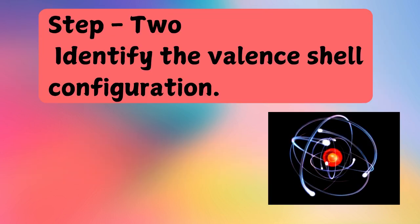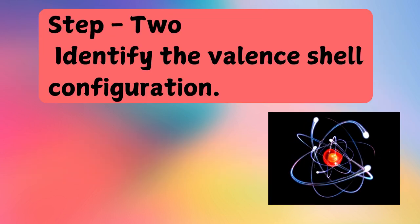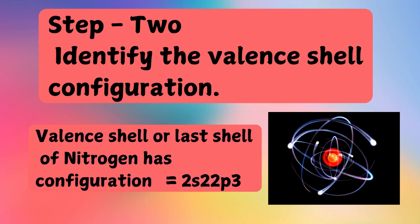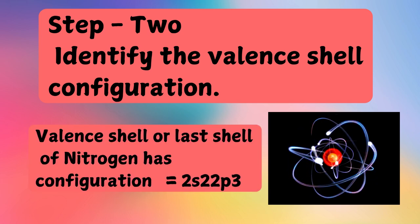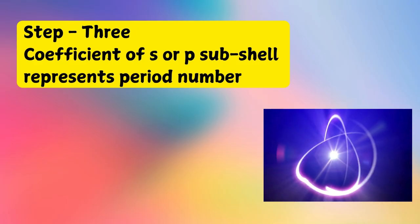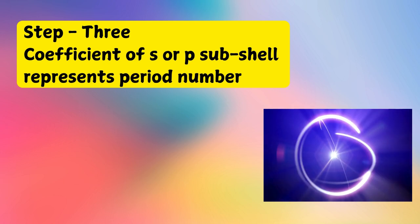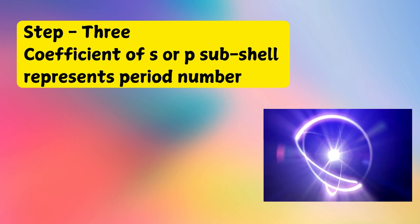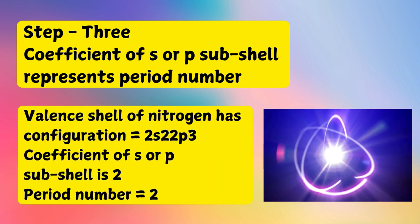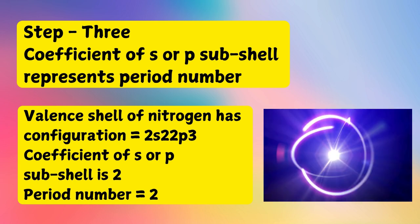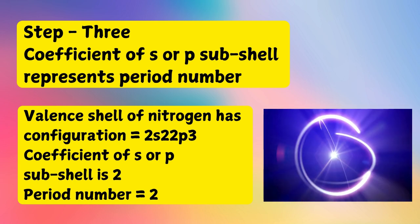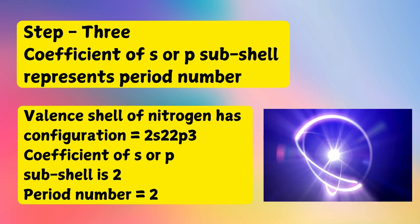Step number 2: Identify the valence shell configuration. The valence shell or last shell configuration of nitrogen is 2s²2p³. Step number 3: The coefficient of the S or P subshell represents the period number. The coefficient of the S or P subshell is 2, therefore the period number equals 2.